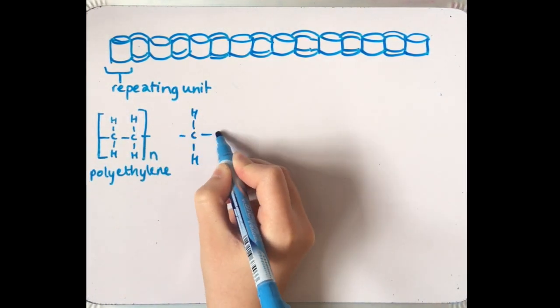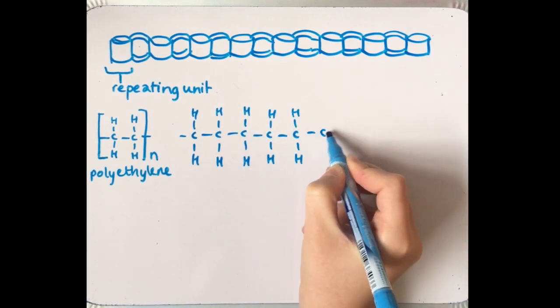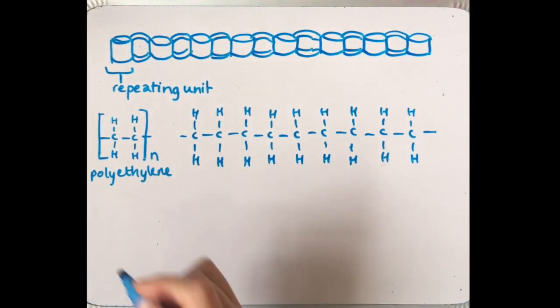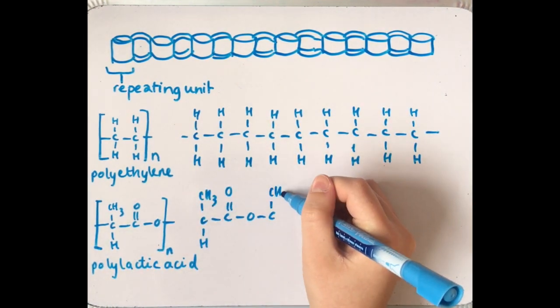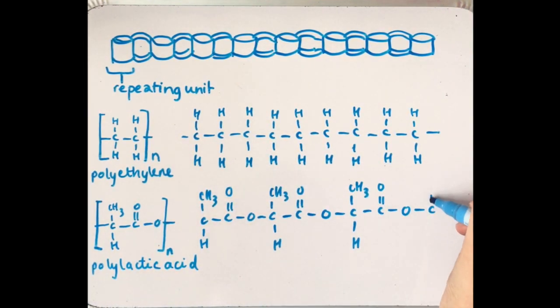Two examples of polymers with one repeating unit are polyethylene and polylactic acid. When polymers are drawn shorthand, the repeating unit is drawn in square brackets with the letter n to symbolize the unit is repeated n amount of times.